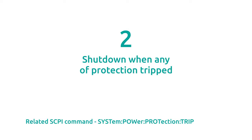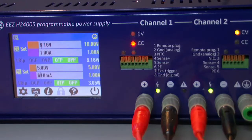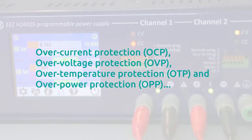Next protection mechanism is related to protection tripping. We have 4 different types of protections on each channel: over-current, over-voltage, over-temperature and over-power protection.